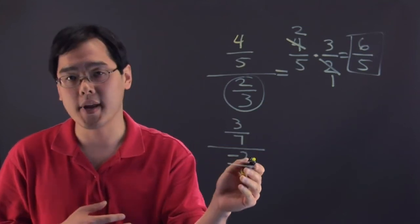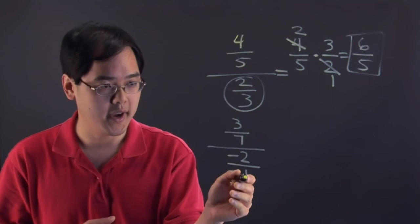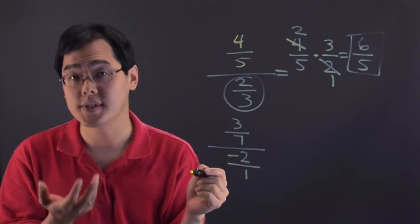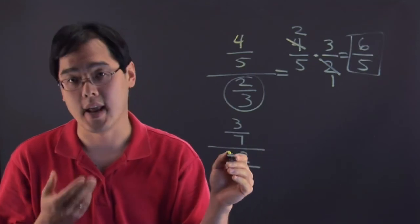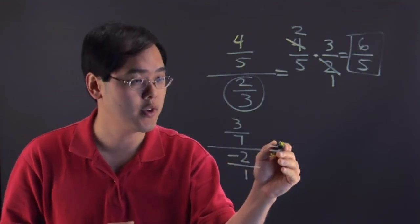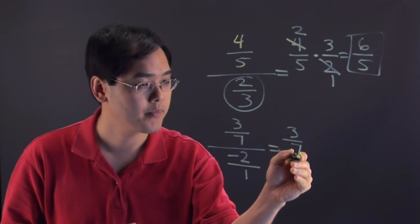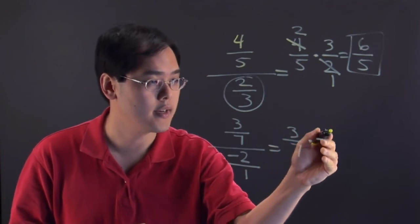So 3 sevenths divided by negative 2 is really dividing by negative 2 over 1, and once again you want to think about its reciprocal. The reciprocal of negative 2 over 1 is negative 1 half. So this is really going to be 3 sevenths times negative 1 half.